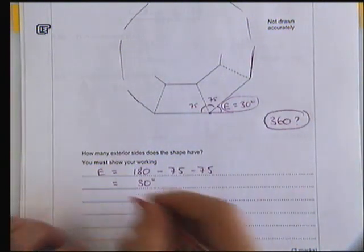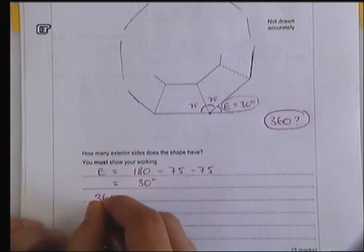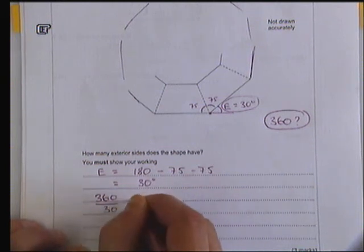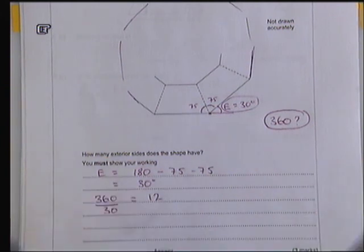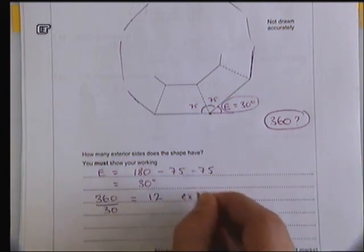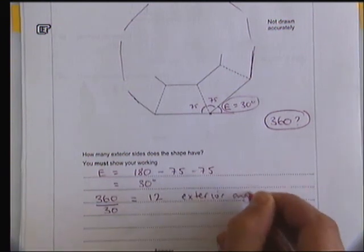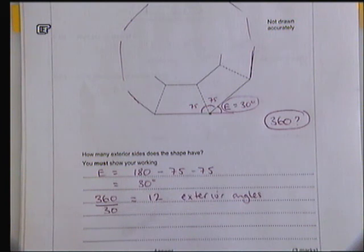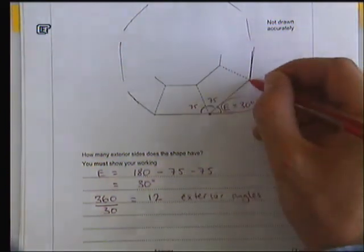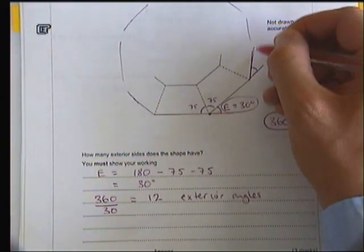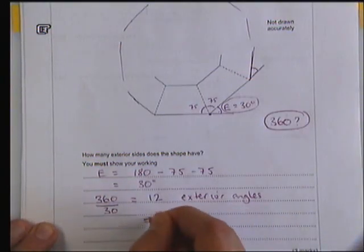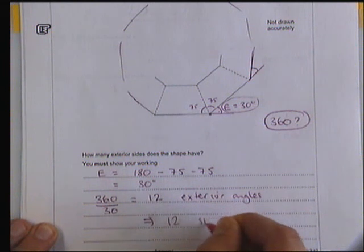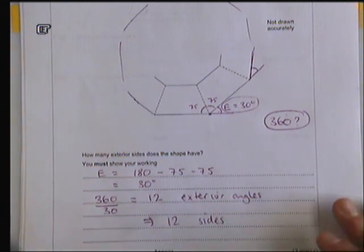The answer to that is found by doing 360 divided by 30, which is 12. That tells me that there will be 12 exterior angles in this shape, 12 exterior angles just like this one here. So there will be 1, 2, etc., until you can count up 12. And 12 exterior angles means that there will also be 12 sides to the shape.